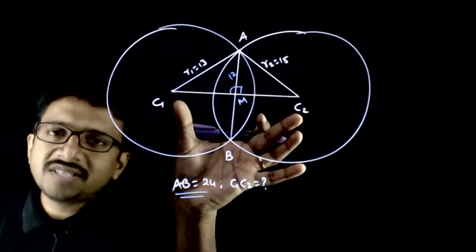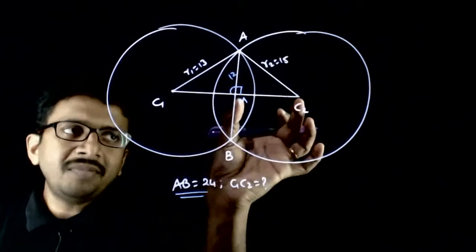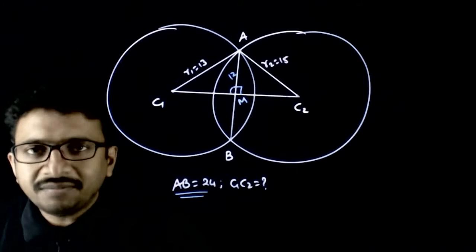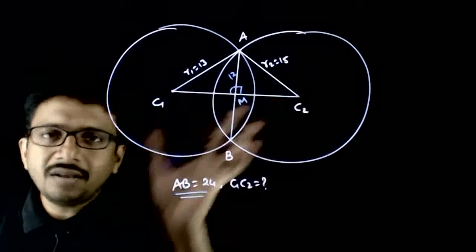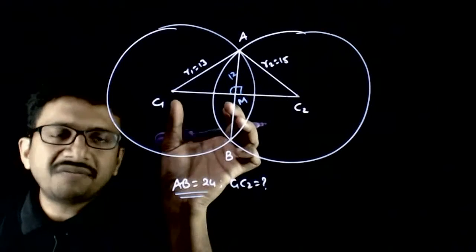Now, if I want the distance between centers, I can find C1M and C2M and add them. So I can find C1C2 by adding C1M and C2M. So how can I find C1M?